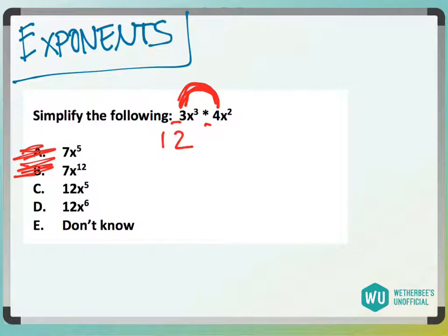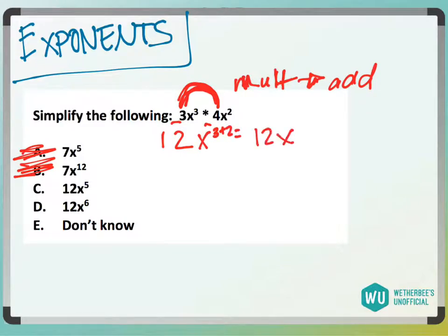But then when we multiply exponents, we add them. Multiplication of exponents turns into addition. So x³ times x² is x to the 3 plus 2, which is 12x⁵, answer choice C.